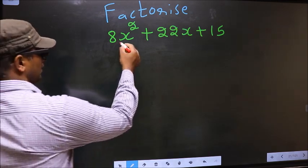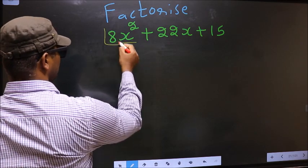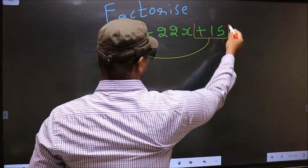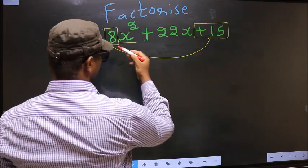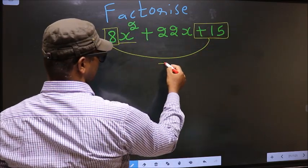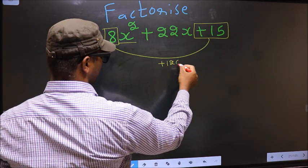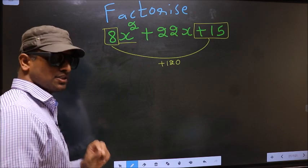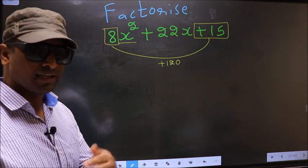The coefficient of x squared, that is 8 here, should be multiplied to the constant, that is plus 15. So 8 into plus 15 is plus 120. This is your step 1.